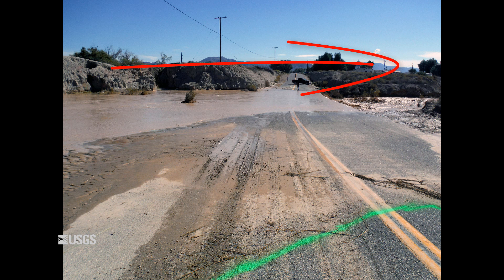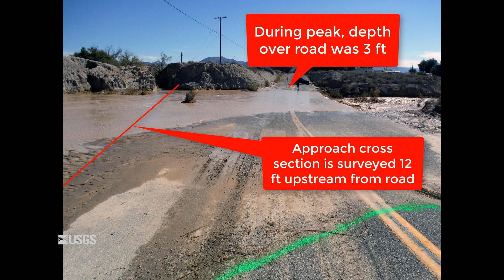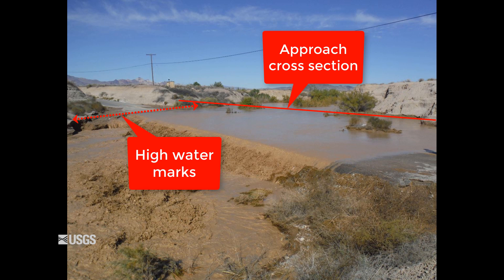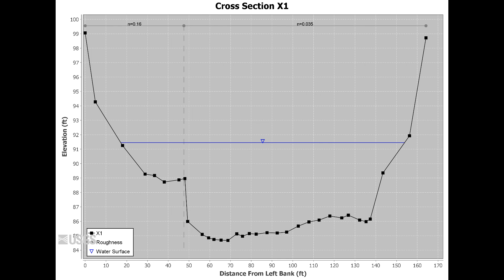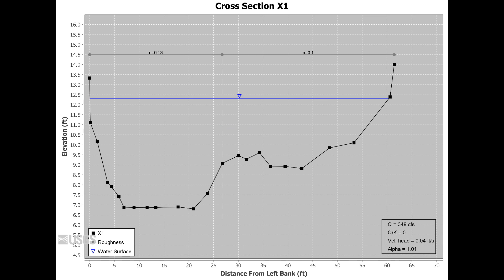Cross sections can be surveyed in any order, but I prefer to survey mine upstream to downstream, and if possible, I also like to start on the same bank for each cross section. Locate the approach cross section at a distance of three to four times the depth of the water going over the crown of the road. For example, if the depth of the water flowing over the crown of the road was three feet, you'll need to locate your approach cross section about twelve feet upstream of the upstream side of the road. When surveying the approach cross section, always start and end at a higher elevation than the high watermarks. Survey enough points on the cross section to define the cross sectional area. For simple cross section shapes, you might need as few as five or ten points, but for complex cross section shapes, you might need forty or fifty or more points.